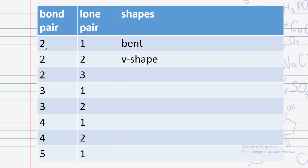If you have two bond pairs and one lone pair, then water has that kind of shape — it becomes v-shape. Remember: two bond pairs, two lone pairs → water-type shape → v-shape. Memorize: B, L, T, T — two T's — that is how you recognize it.